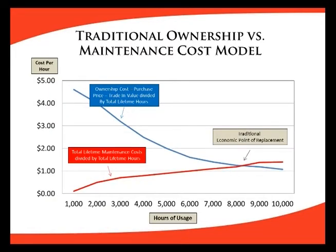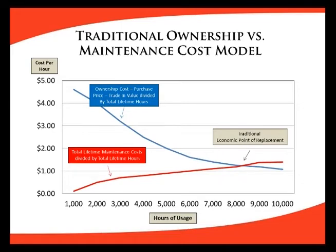The traditional ownership versus maintenance cost model utilizes the ownership cost, which is the depreciated value minus the trade-in or salvage value, divided by the total lifetime hours, represented in blue on this graph. Also on the graph is the total lifetime maintenance cost, which is a cumulative summation of all maintenance costs in the vehicle, also divided by the total lifetime hours to give you a cost per hour. Where the two graphs intersect is considered the economic point of replacement.